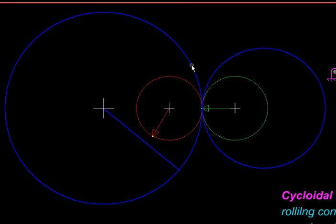The good part is the two rollers can maintain a fixed velocity ratio, so there is a smooth transfer of motion. But the downside is if the load is high, then the friction can let us down — there could be slip.